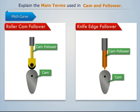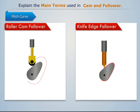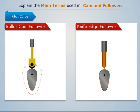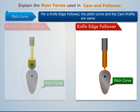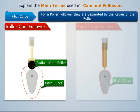Pitch curve: it is the curve generated by the trace point when the follower moves relative to the cam. For a knife edge follower, the pitch curve and the cam profile are the same, whereas for a roller follower they are separated by the radius of the roller.